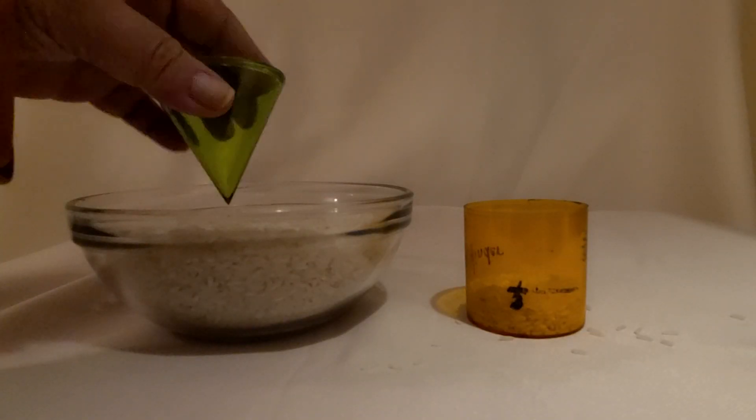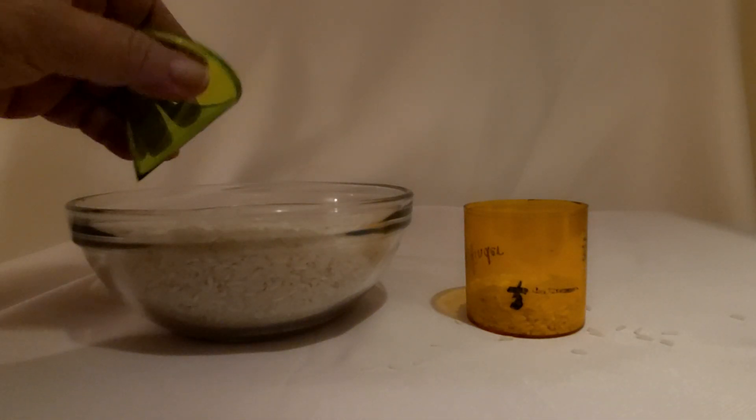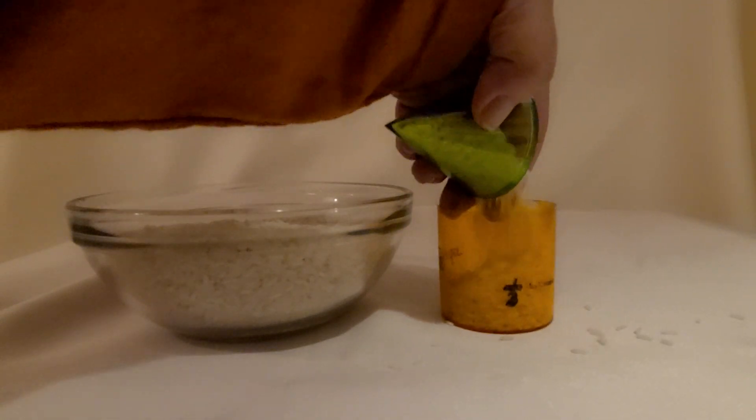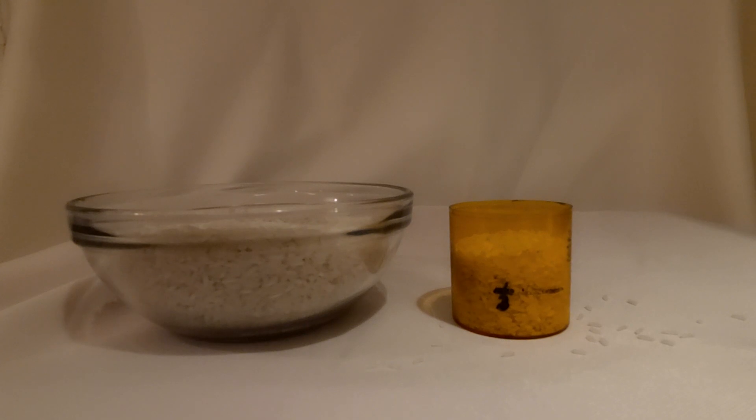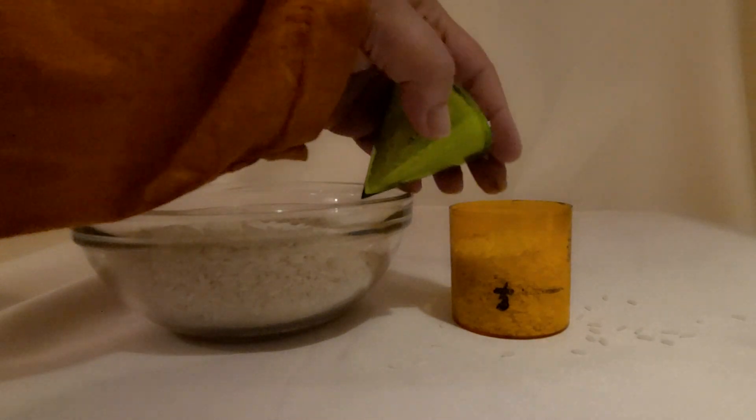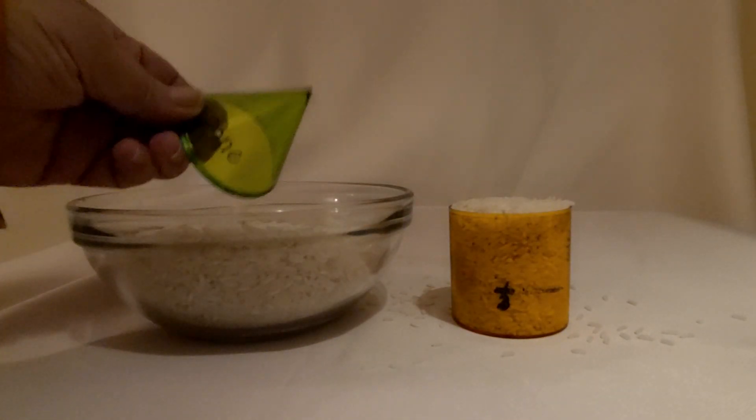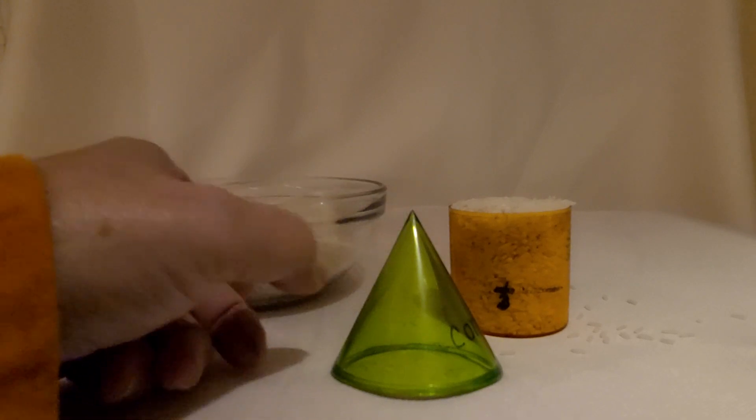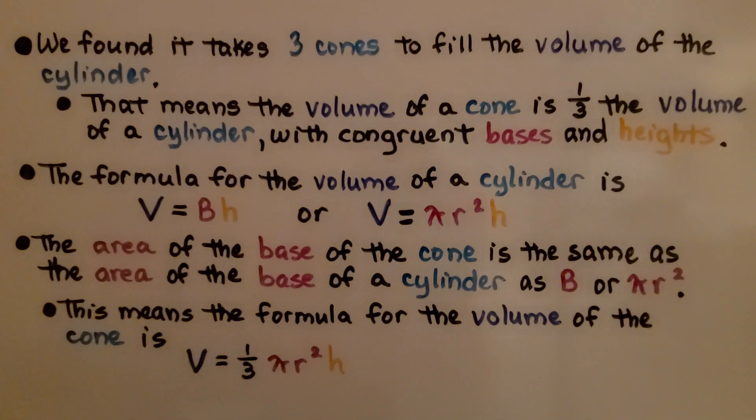So one coneful is one-third of that cylinder. Let's do a second one. It's not full yet, so let's do it again. We're going to pour one more coneful in, hopefully without spilling too much. And we filled it. It took three cones that had the same base area and the same height as the cylinder.